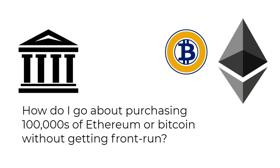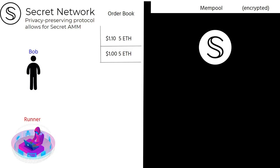Front-running is a massive problem. If you are an institution or a user wanting to use a decentralized exchange, how do you go about purchasing hundreds and thousands of Ethereum or wrapped Bitcoin without getting front-run? The answer is Secret Network — a privacy-preserving protocol that allows for tools such as the Secret Automated Market Maker.